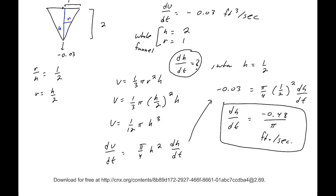That is the end of this section. I would highly suggest you read the book because there are a couple other examples there, but these four really cover the big classes of problems. We used trigonometric identities in number 3, the Pythagorean theorem in example 2, a simple volume formula in example 1, and similar triangles in the cone problem. That is section 4.1 related rates.